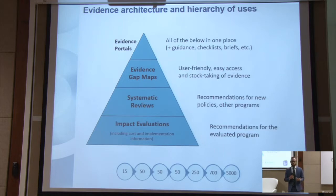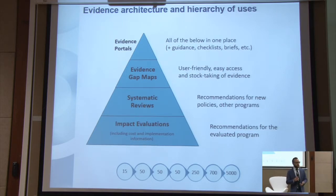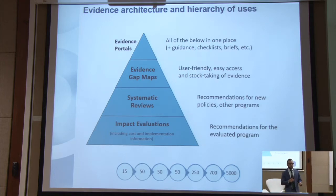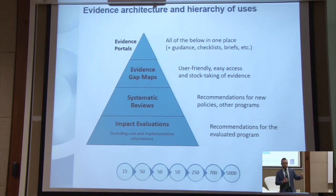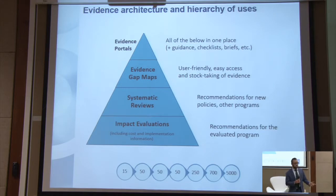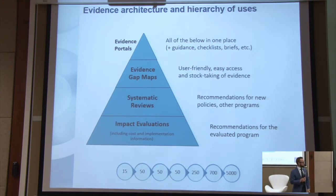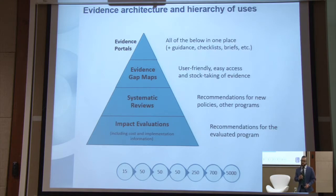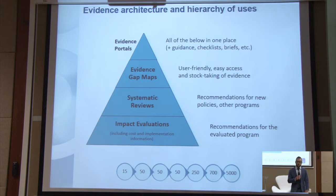Finally, at the top, we have our evidence portals, which make it easy to access all of those items below, as well as working papers, guidelines, and other kinds of documents. To summarize what we've done in the 11 years that we've been around: 15 evidence gap maps created, 50 countries in which impact evaluations have been funded, 50 systematic reviews, 50 members of 3IE as a network — including funders, NGOs, and governments — 250 impact evaluations funded, 700 systematic reviews in our repository, and about 5,000 impact evaluations in our repository that are open and accessible to anyone on the website.